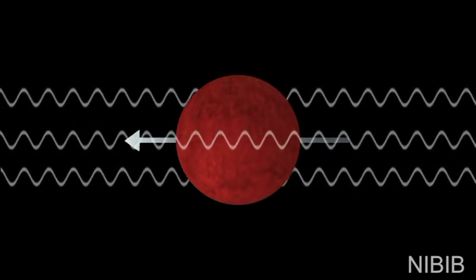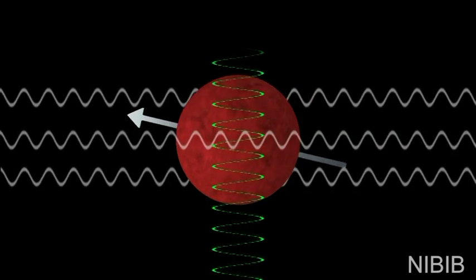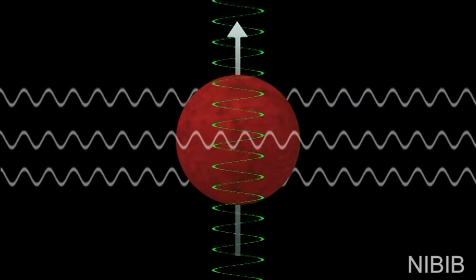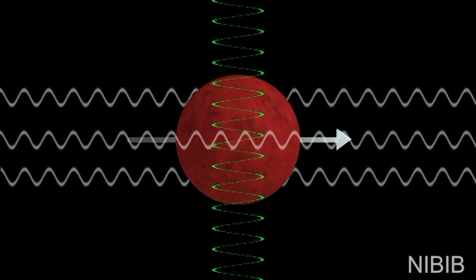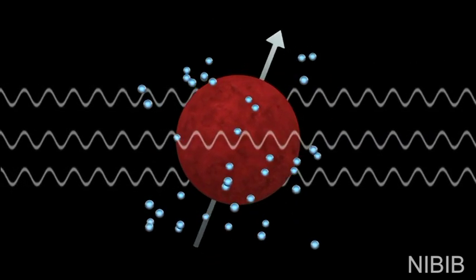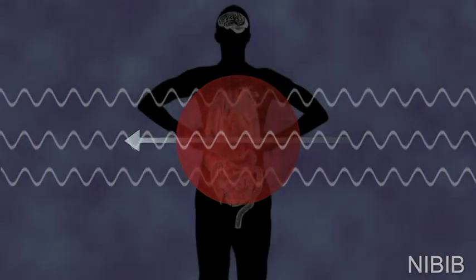The MRI technician then introduces a radio frequency pulse that disrupts the proton and forces it either into a 90 degree or 180 degree realignment with the static magnetic field. Since the radio frequency pulse pushes the proton against its nature, once this pulse is turned off, the protons realign with that magnetic field, releasing electromagnetic energy along the way.